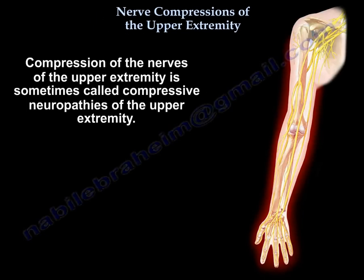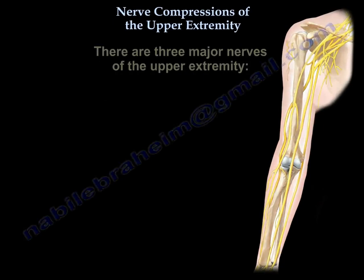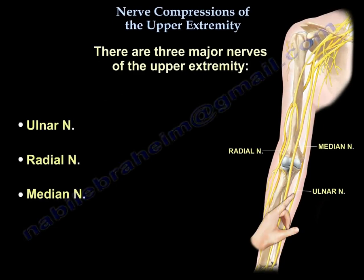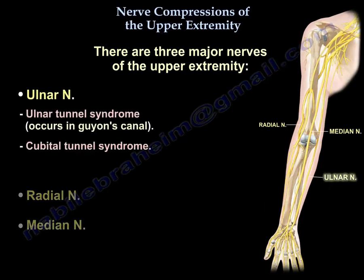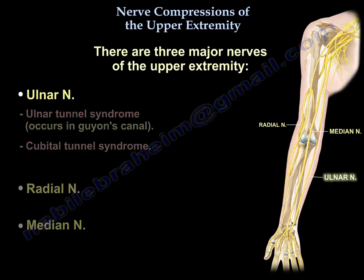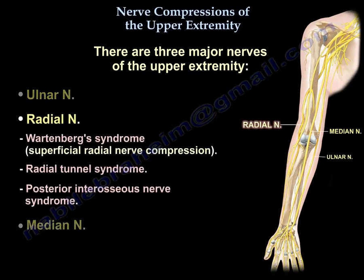Nerve compressions of the upper extremity, sometimes called compressive neuropathies of the upper extremity. There are three major nerves: the ulnar nerve, the radial nerve, and the median nerve. The ulnar nerve will give ulnar tunnel syndrome, which occurs in Guyon's canal, or cubital tunnel syndrome. The radial nerve will give Wartenberg syndrome, which is a superficial radial nerve compression, radial tunnel syndrome, and posterior interosseous nerve syndrome.